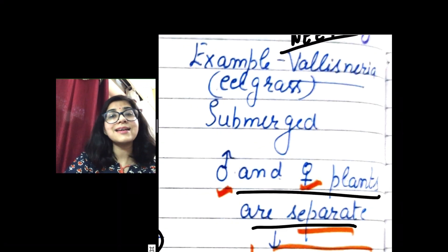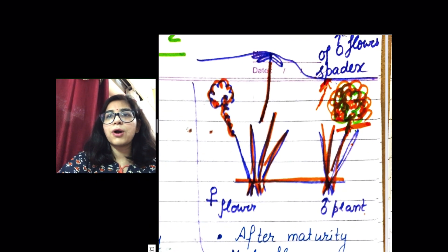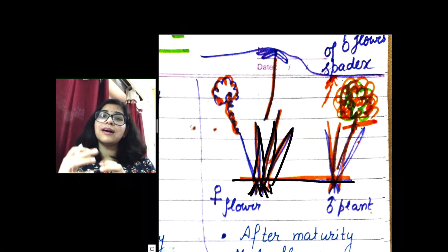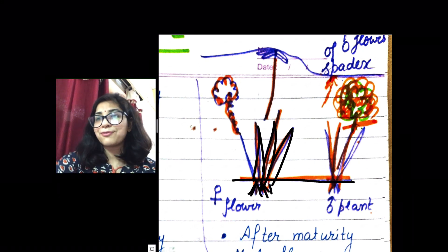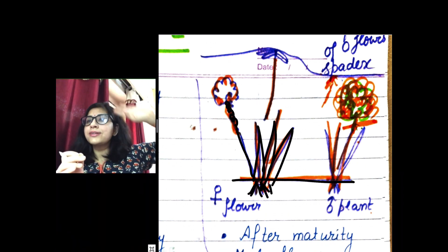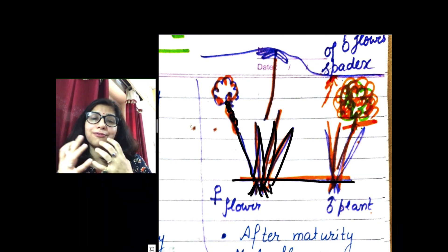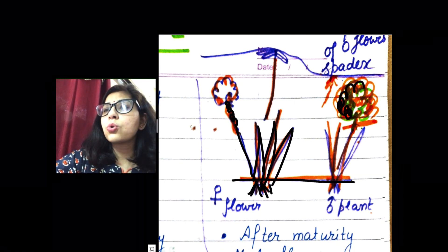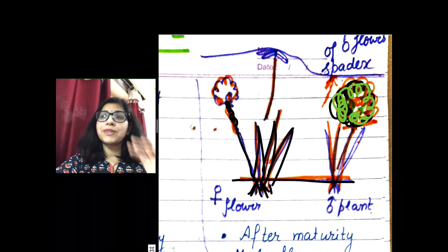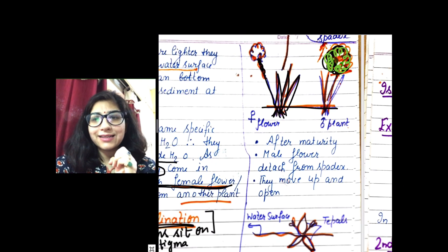Looking at the diagram, another very important feature of Vallisneria: the male flower and female flower are separate. The female flower has a very long stalk with a long stigma and style. The male flowers grow in a group called a spadix — this group of male flowers in Vallisneria is known as a spadix.